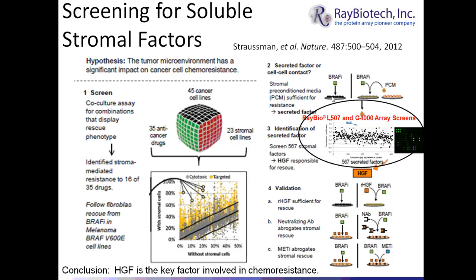BRAF inhibitors initially result in cell death, but over time resistance develops. In the co-culture with stromal cells, adding anti-cancer drugs is ineffective and cells survive. Samples from the media were taken to determine what stromal cells are secreting that drives this resistance. Using the Ray Biotech L507 and G4000 arrays to screen the media, they identified human growth factor (HGF) as the culprit.